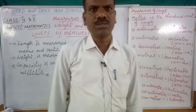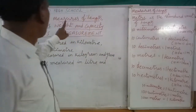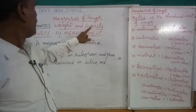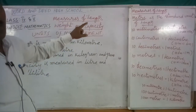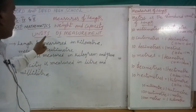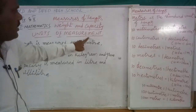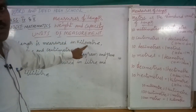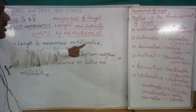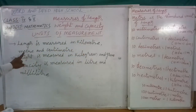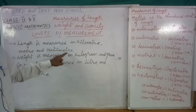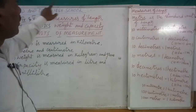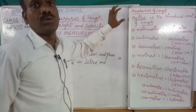In the previous class we discussed measures of length, weight, and capacity. In this chapter on units of measurements, length is measured in kilometers — for example, the distance between two cities. We also use meters; for example, the length of our classroom is measured in meters. Centimeters are used for smaller measurements, such as the length of our classroom blackboard.